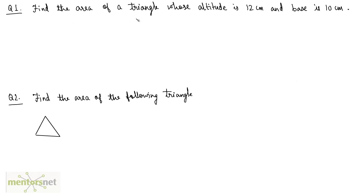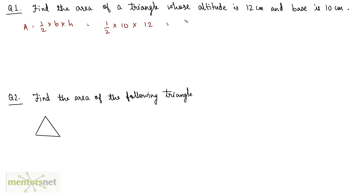Find the area of a triangle whose altitude is 12 cm and base is 10 cm. We have been given the height and the base, so we can calculate the area. Area is equal to half into base into height, that is half into 10 into 12, which is 120 divided by 2. Therefore, area is equal to 60 cm squared.